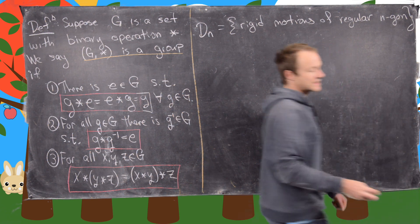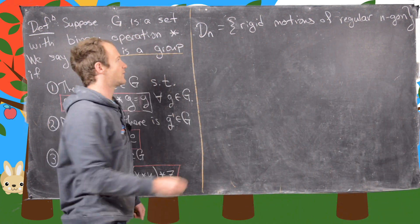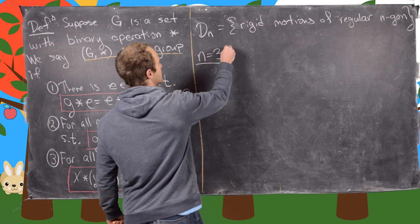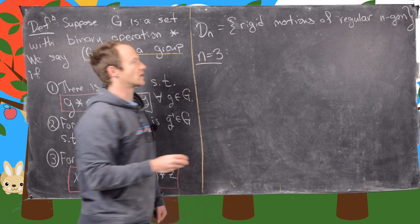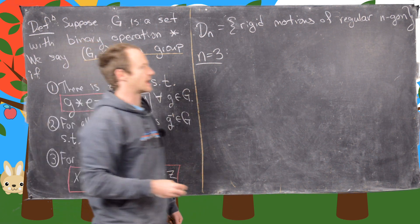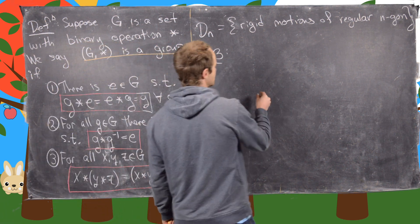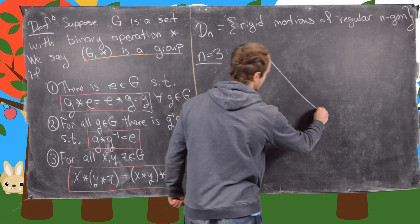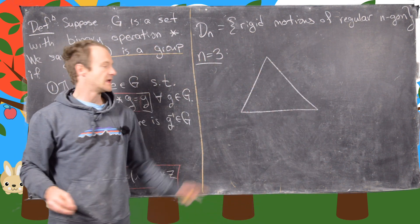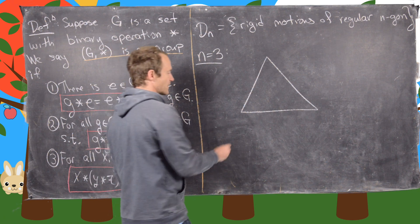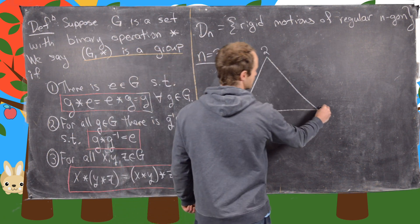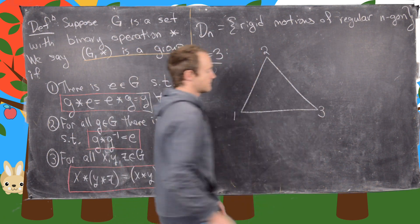Let's look at the simplest example first. We'll look at n equals 3 — in other words, the rigid motions of an equilateral triangle. So let's draw an equilateral triangle here to get an idea of what's going on. Now let's label the vertices: we'll have 1, 2, and 3.